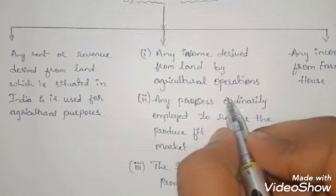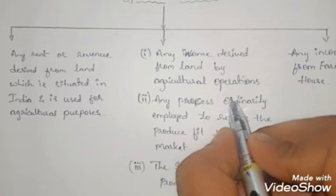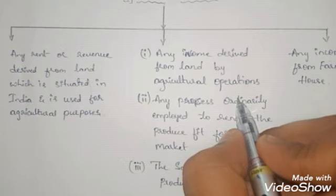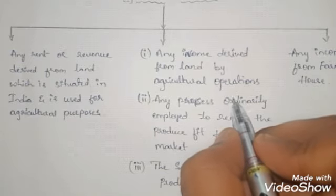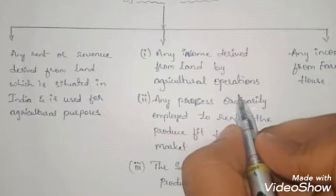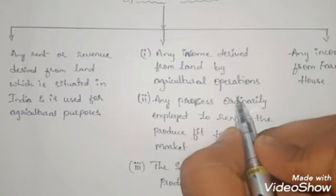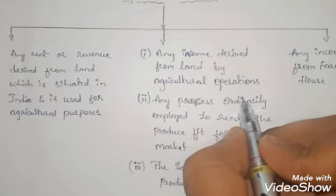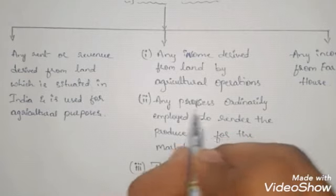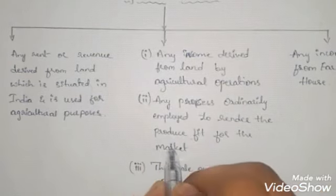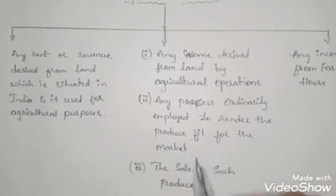Any income derived from land by agricultural operations — meaning if we are doing agricultural activities and growing crops, flowers, fruits, plants, etc. — if they are sold in the market, the revenue received by selling those products is treated as agricultural income.